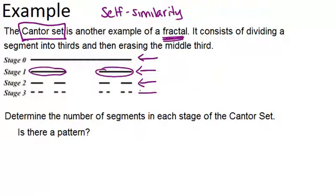So that's an interesting question. So let's make a table in order to investigate this and record what we see. So what we want to compare is the stage number to the number of segments. So in stage 0, we just have one segment. In stage 1, we have two segments.